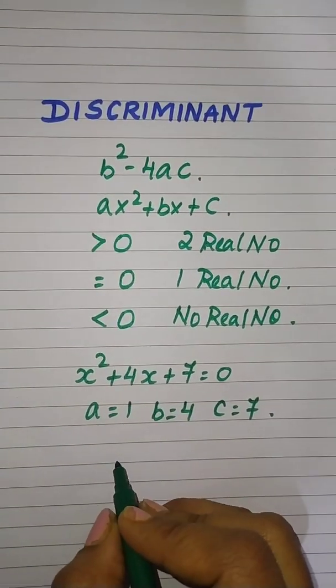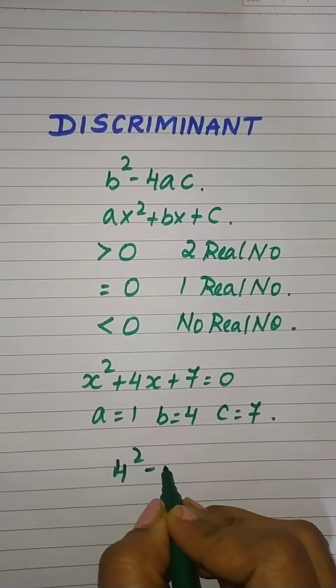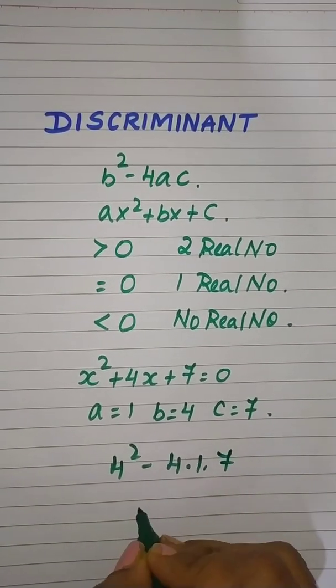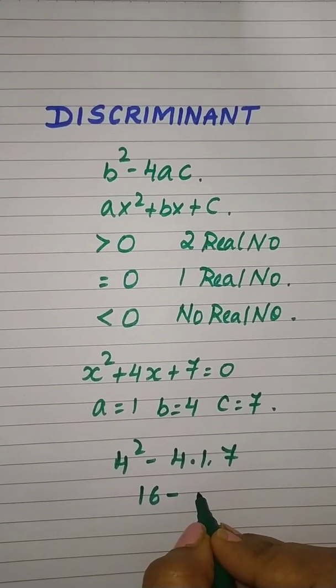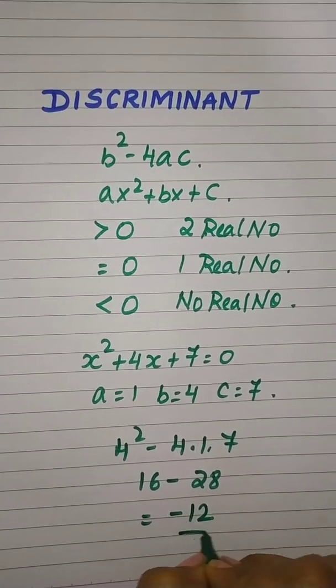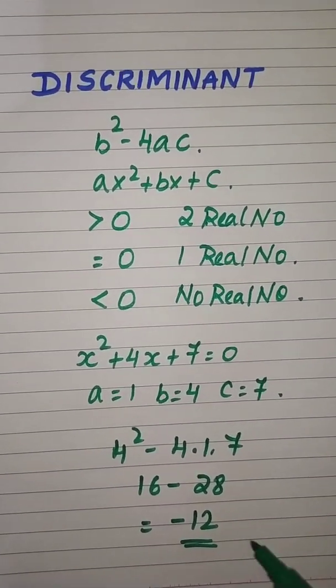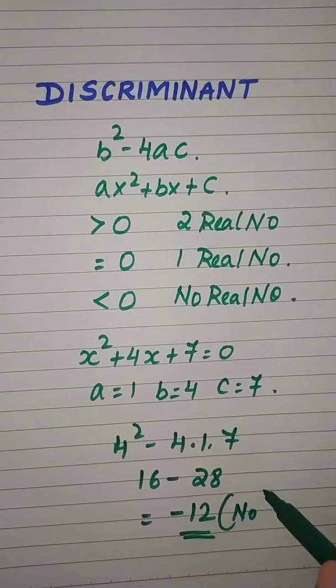Now I apply the discriminant and find how many roots we get. So 4 squared minus 4 into 1 into 7, which is 16 minus 28, and you get minus 12. As this discriminant is less than 0, hence you have no real numbers.